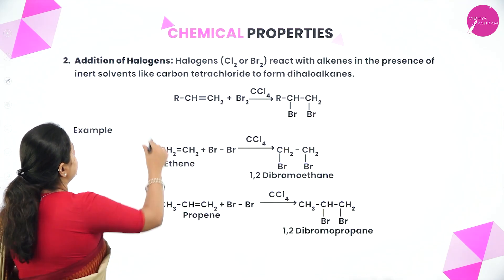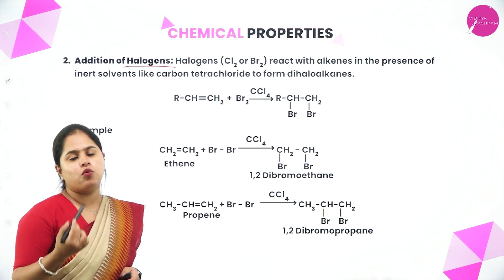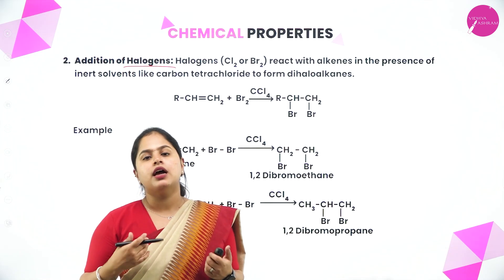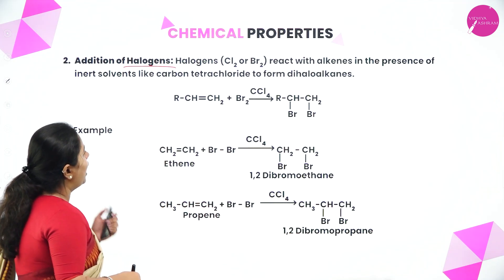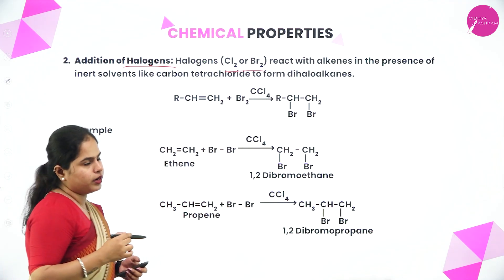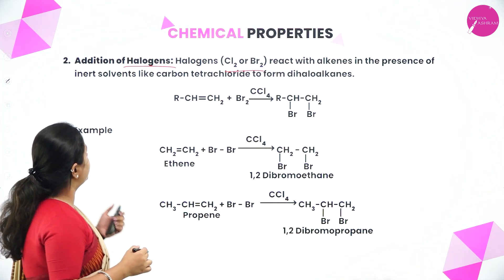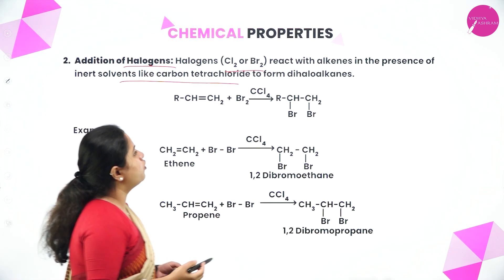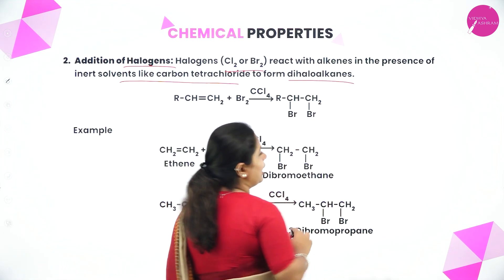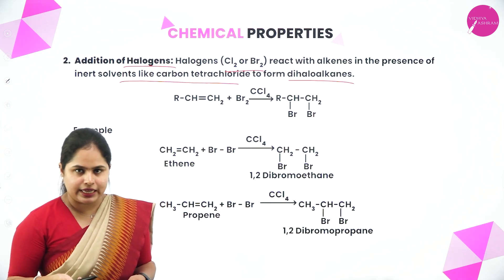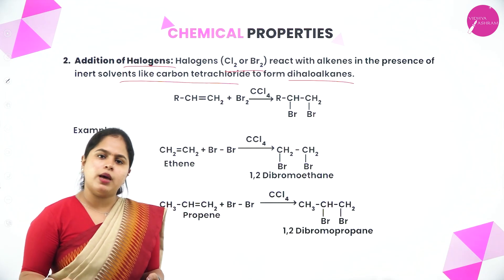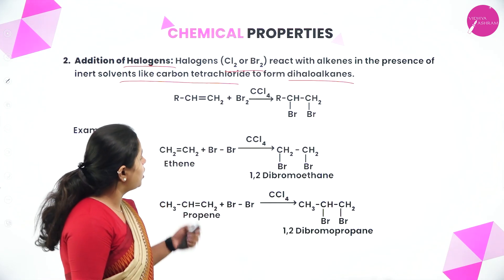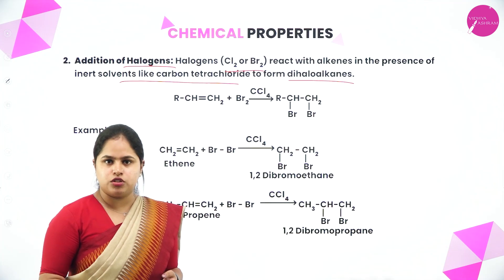Moving on to the next reaction: addition of halogen, also called halogenation. Halogens — normally we use chlorine or bromine — react with alkenes in the presence of inert solvents like CCl4 (carbon tetrachloride) to form dihaloalkanes. When something is added, the double bond becomes a single bond, so you will get an alkane with two halogen atoms added.